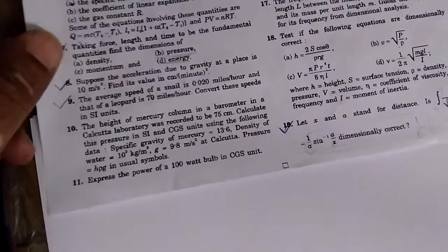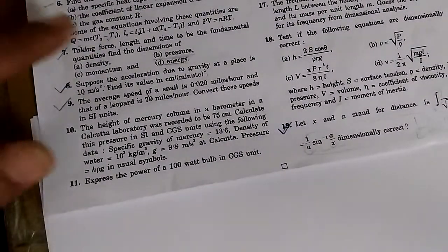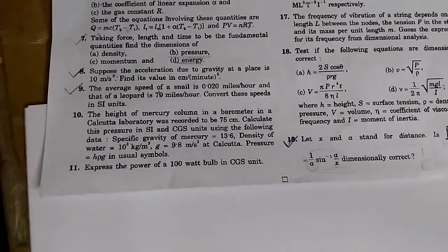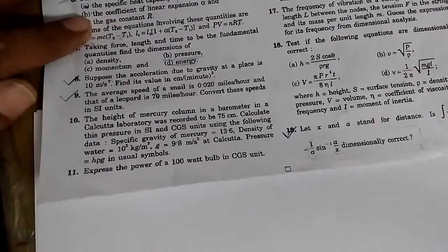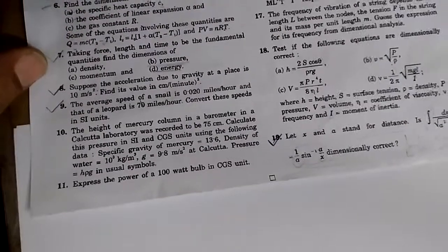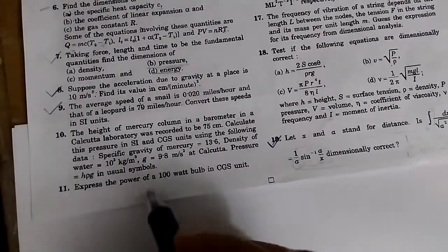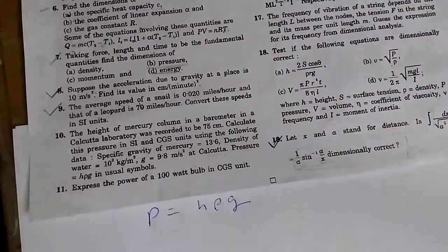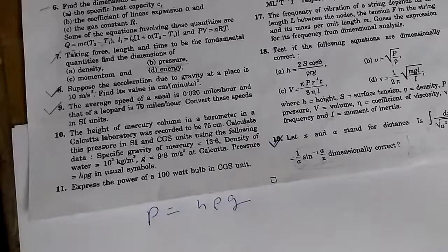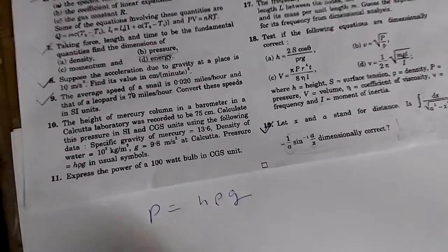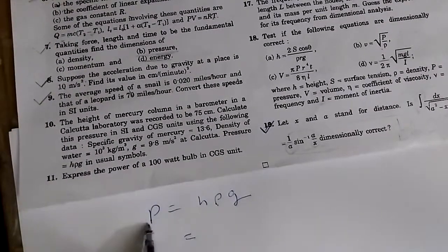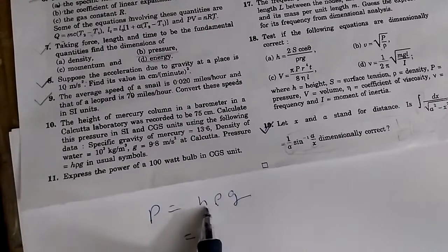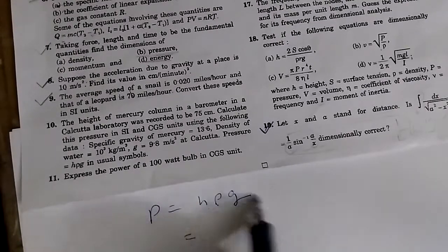So in this particular problem, question number, they have already given that the pressure, atmospheric pressure in terms of mercury column is given by P is equal to H rho G. Where H is the mercury column height, and we need to calculate this pressure in terms of, convert this mercury height into pressure, and this is the formula for this.